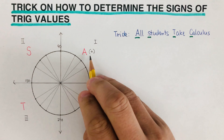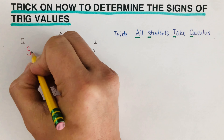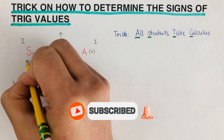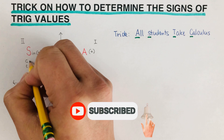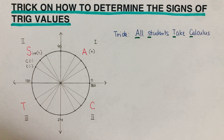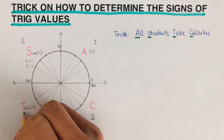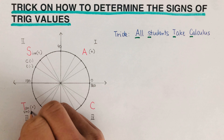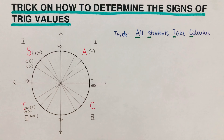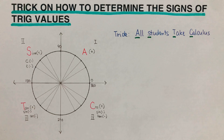When we say A, this means all of the sine, cosine, and tangent are positive in the first quadrant. On the second quadrant, S means only the sine is positive — cosine and tangent are negative. On the third quadrant, T means only the tangent is positive — sine and cosine are negative. On the fourth quadrant, C means only the cosine is positive — sine and tangent are negative.